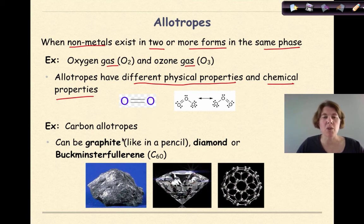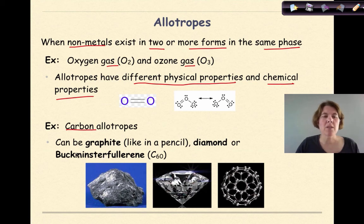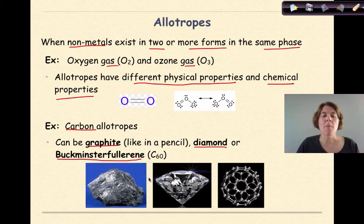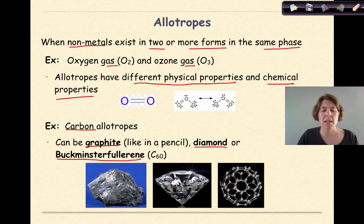Another allotrope you need to be familiar with are carbon allotropes. If you've ever written with a pencil, you're writing with graphite — an allotrope of carbon. Diamond is an allotrope of carbon. The Buckminster Fullerene is an allotrope of carbon. They're all made of carbon and all in the solid state, but they behave differently because of their different physical and chemical properties.